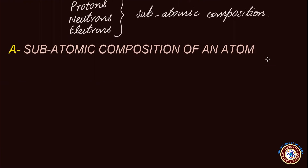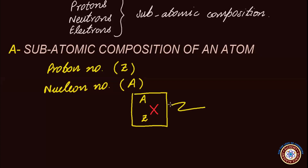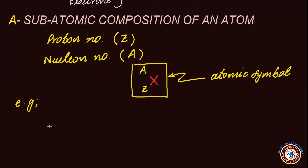Atoms are neutral particles, and each atom is characterized by its proton number denoted by Z and a nucleon number denoted by capital A. Both these numbers are written along with the chemical symbol of the element. If we express the chemical symbol of an element by capital X, the number written at the bottom left is the proton number and the number at the top left is the nucleon number. This entire notation is called the atomic symbol.